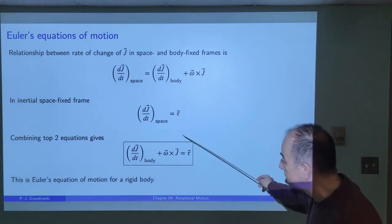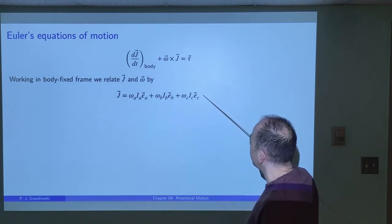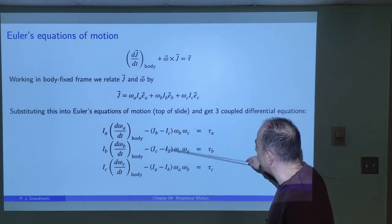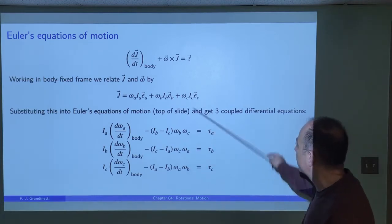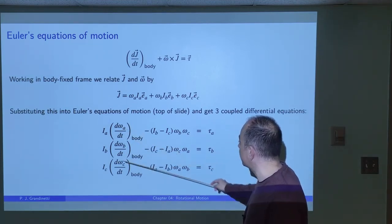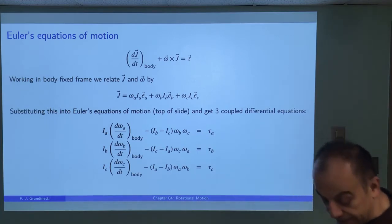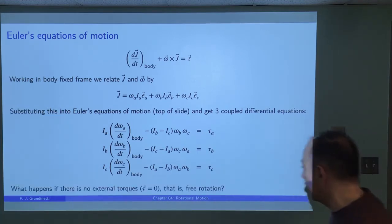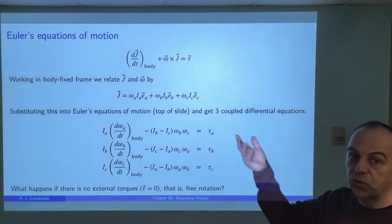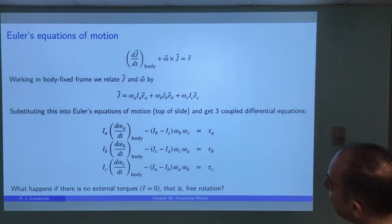This is a vector equation, so let's look at its components. Writing the J vector in terms of the principal axis system in the body-fixed frame and expanding gives three coupled differential equations. The rate of change of omega_A depends on omega_B and omega_C, and similarly for the others. We're going to look at the special case where the external torque is zero — a rigid body freely rotating in space with no external torque applied.